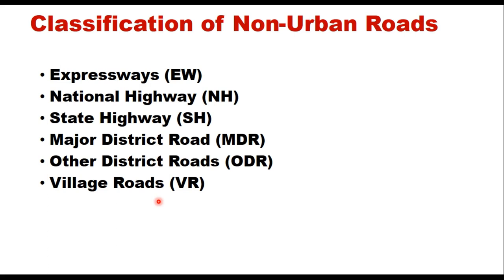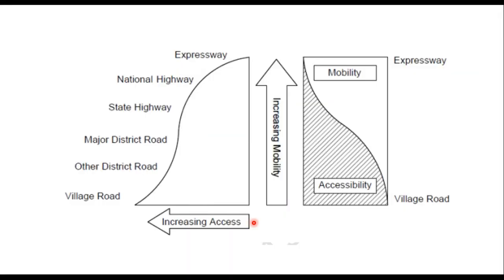There are two major considerations for functional classification of roads: accessibility and mobility. This figure shows the relationship between accessibility and mobility. Mobility refers to the smooth and efficient movement of goods and people, whereas accessibility is the easiness of reaching or accessing a facility. Mobility is very high in case of expressways but very low in case of village roads. Accessibility, however, is very high for village roads and other district roads but very low for high-category roads like expressways and national highways.